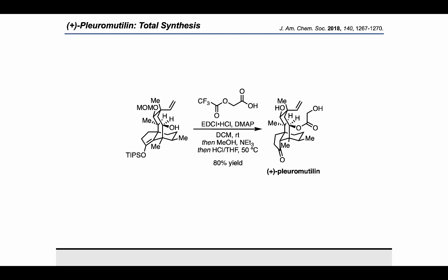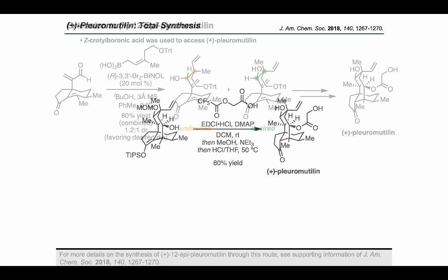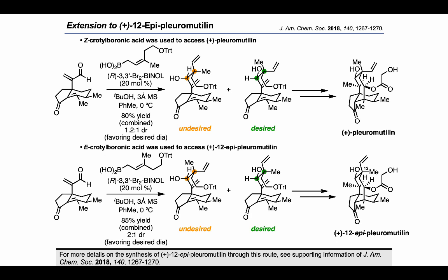The authors also demonstrated that the chemistry they developed following the crotylation was also applicable to the synthesis of 12-epi plurimutalin. To do this they switched from the Z-crotylboronic acid used in the original route to the E-crotylboronic acid, which allowed them to obtain the diastereomer needed to access the C12 epimer of plurimutalin through essentially the same route.